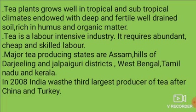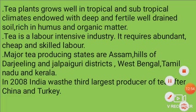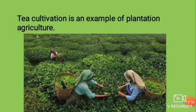Tea plants grow well in tropical and subtropical climates with deep, fertile, well-drained soil rich in humus and organic matter. Tea is a labor-intensive industry requiring abundant, cheap and skilled labor. Major tea producing states are Assam, the hills of Darjeeling and Jalpaiguri district in West Bengal, Tamil Nadu and Kerala. In 2008, India was the third largest producer of tea after China and Turkey. Tea cultivation is an example of plantation agriculture.